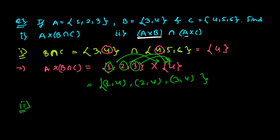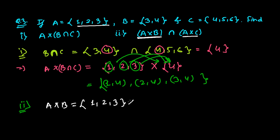In the second question, we first need to find A cross B and then A cross C. Let's start with A cross B. A has elements 1, 2, 3 and B has elements 3 and 4.